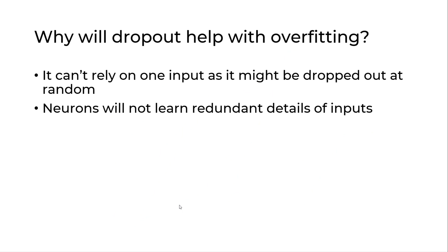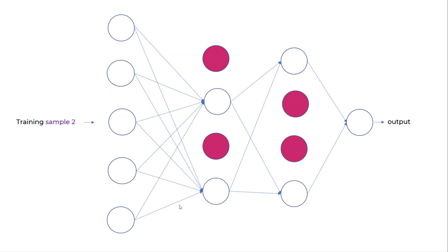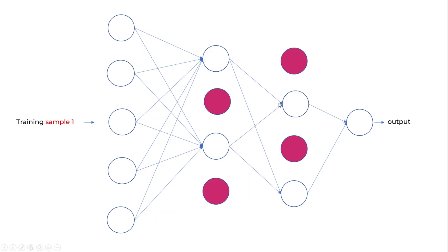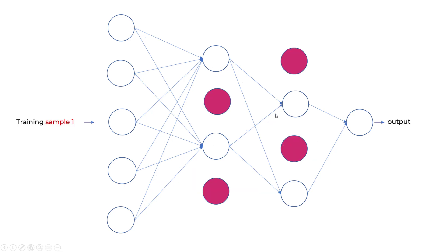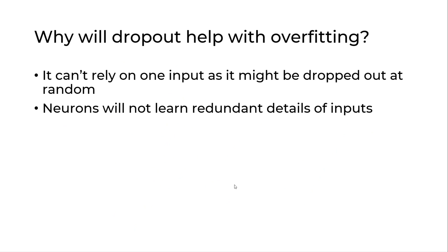Why does dropout address overfitting? When you are dropping these neurons, a neuron cannot rely on one particular input since it might be dropped out at random. For example, a neuron relying on four inputs — if two are dropped at random, it is not seeing the output from those two neurons. That way it doesn't create any bias. Sometimes if you have a prominent feature, neurons might become biased with specific features, and you don't want that. Hence this technique works, and neurons will also not learn redundant details from the input.